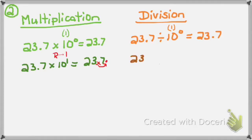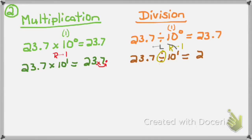But what if I divided instead? 23 and 7 tenths divided by 10 to the 1st power — I use the same philosophy: 10 to the 1st power is greater than 1, which means I move my decimal to the right one place. But it's a division problem, so I have to go in the opposite direction — to the left. I write down 23 and 7 tenths, cross out the decimal, and move it one place to the left. 23 and 7 tenths divided by 10 to the 1st power equals 2 and 37 hundredths.